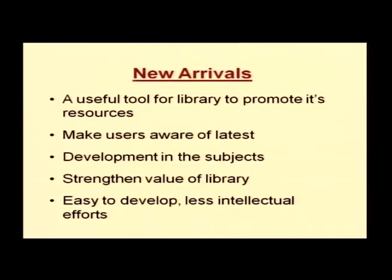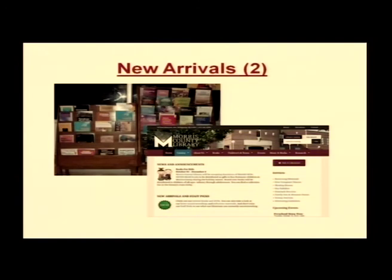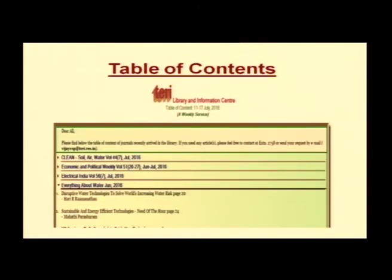Every academic library publishes a new arrival list, which makes users aware of recent additions to the library. Different varieties of new arrival services have been developed: displaying new arrivals in the library itself, on a website, or announcing them in the form of a table of contents for new journal articles. This is also called current awareness service; the current contents service and table of contents are both part of current awareness service.